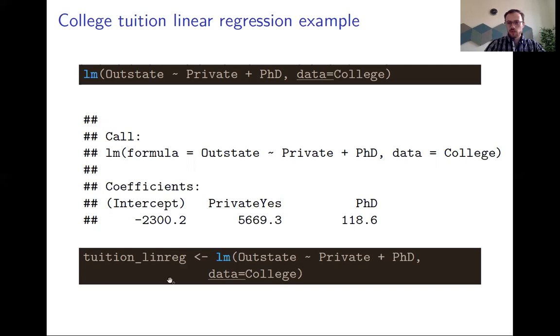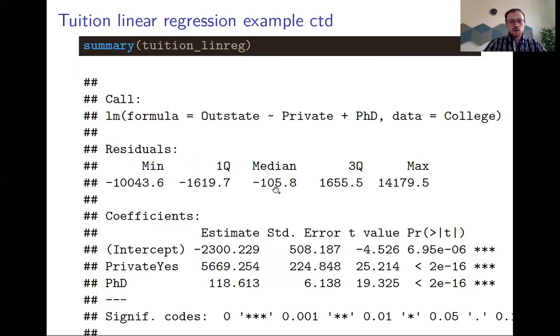You can then save this regression output as an object, here I call it tuition_linreg, and then if you use the summary function on this object we get a lot more information. We get the coefficients, the standard errors, t statistics, p values, and this table would also include, for example, the R squared or the F statistics of the entire model.